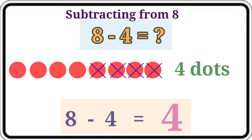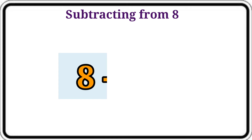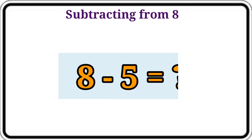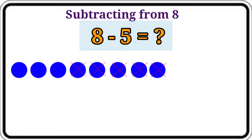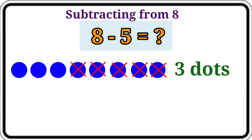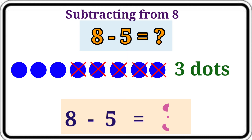Then let's see the next question: 8 minus 5. Again we count the dots that are not crossed. Let's count: 1, 2, 3. Here 3 dots. Therefore the answer is 3. Let's write them. 8 minus 5 is equal to 3.